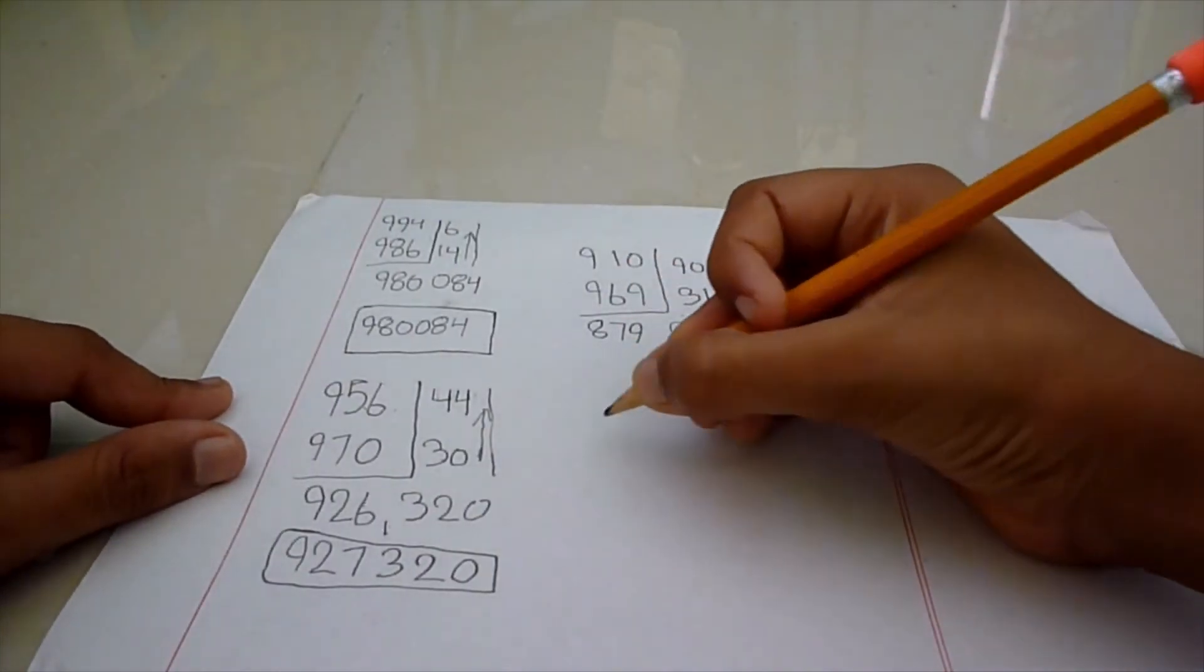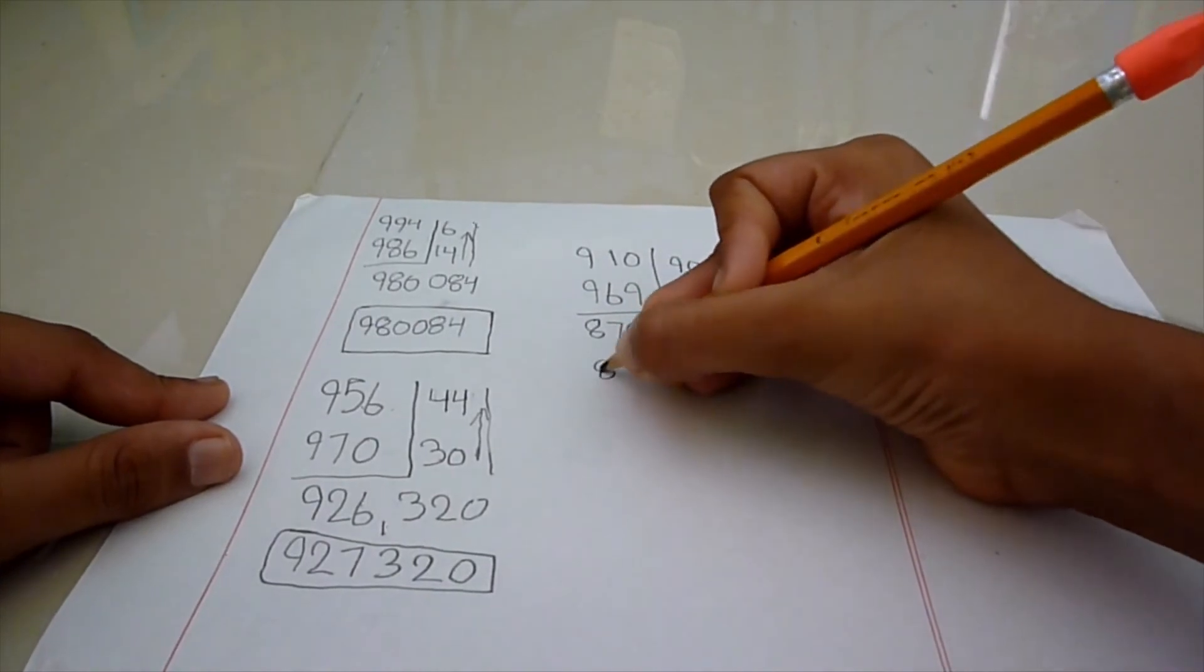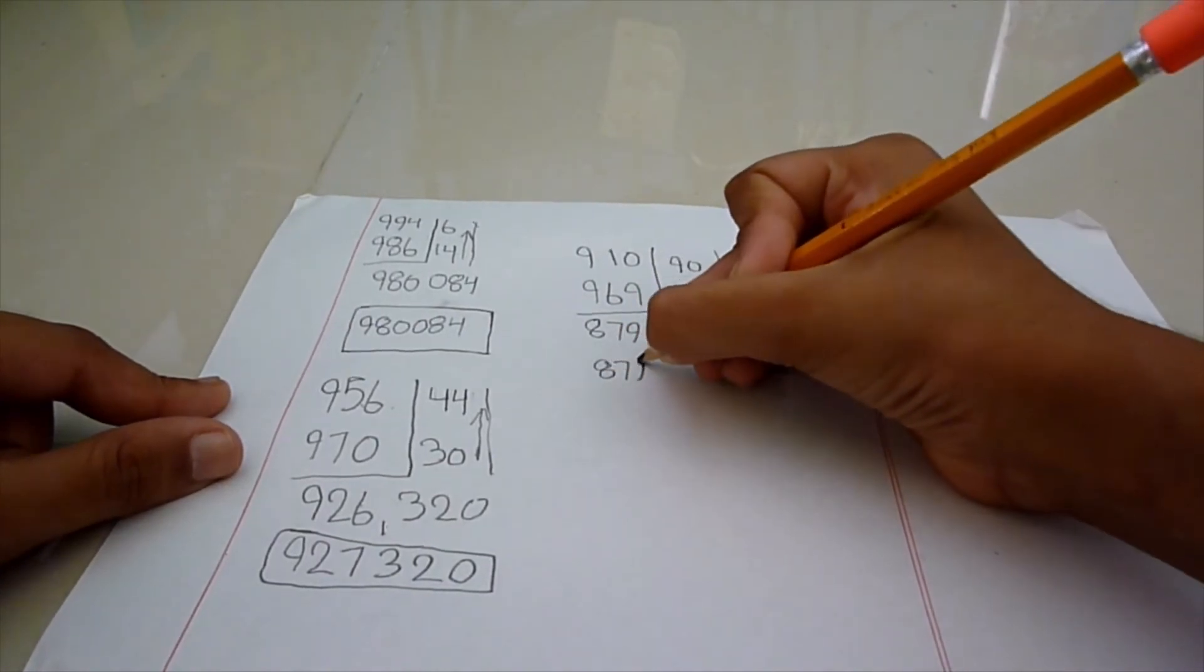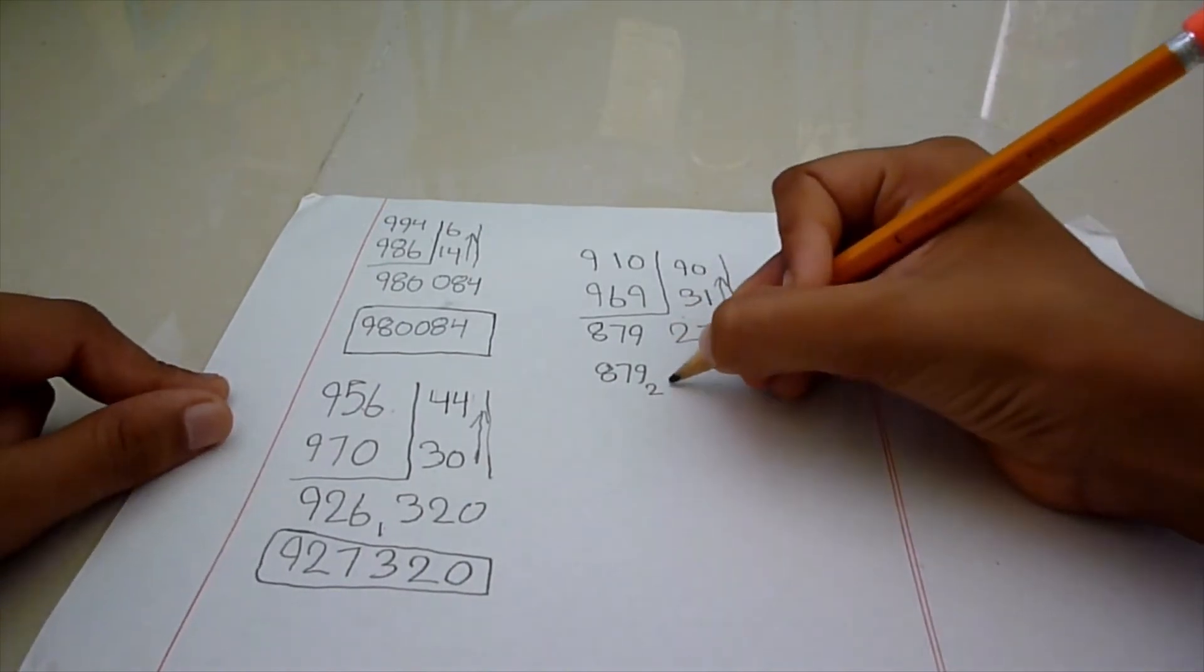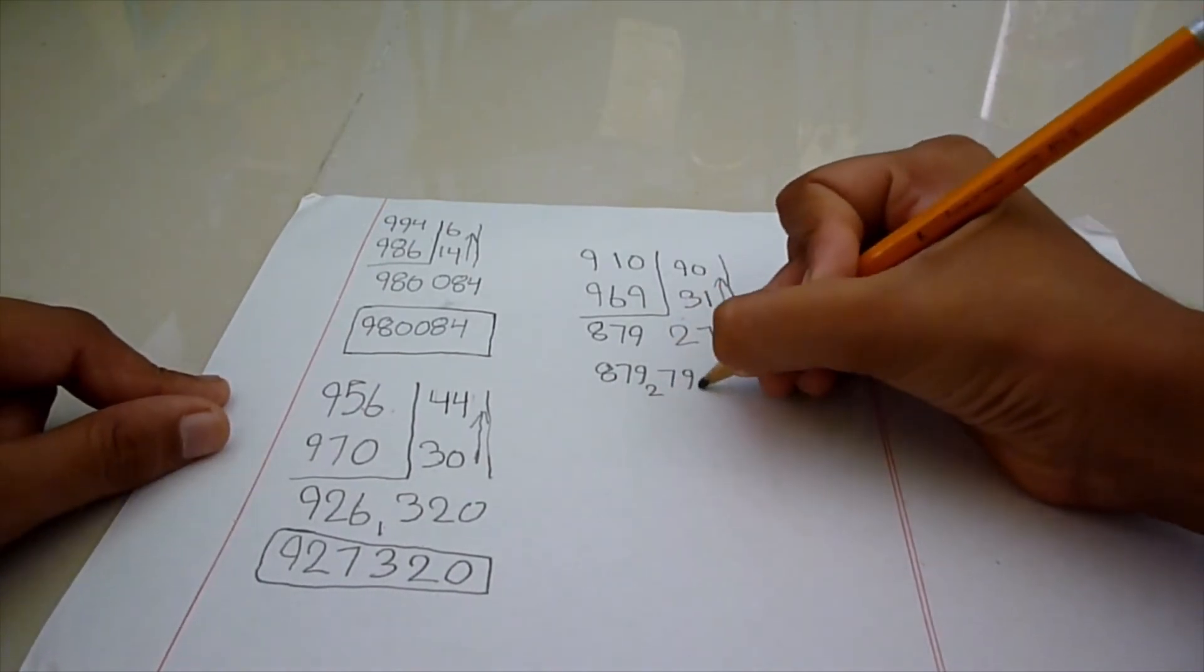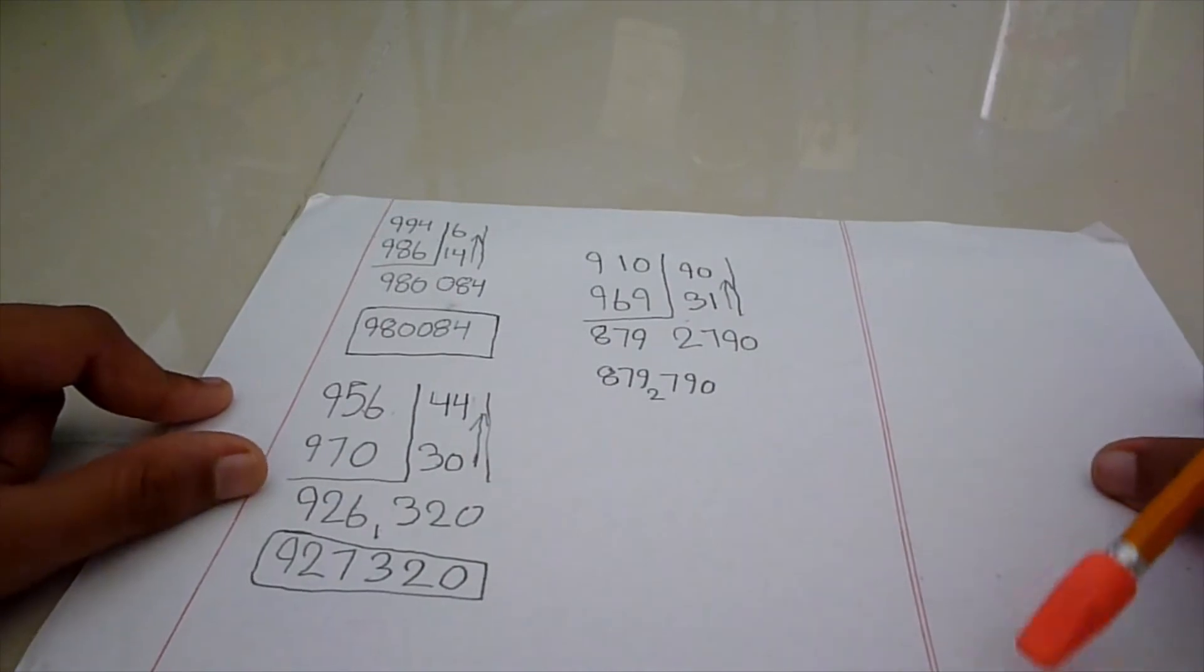Let's write it down. Write it down: 8, 7, 9. Put the 2 a little bit down. 7, 9, 0. As you can see here.